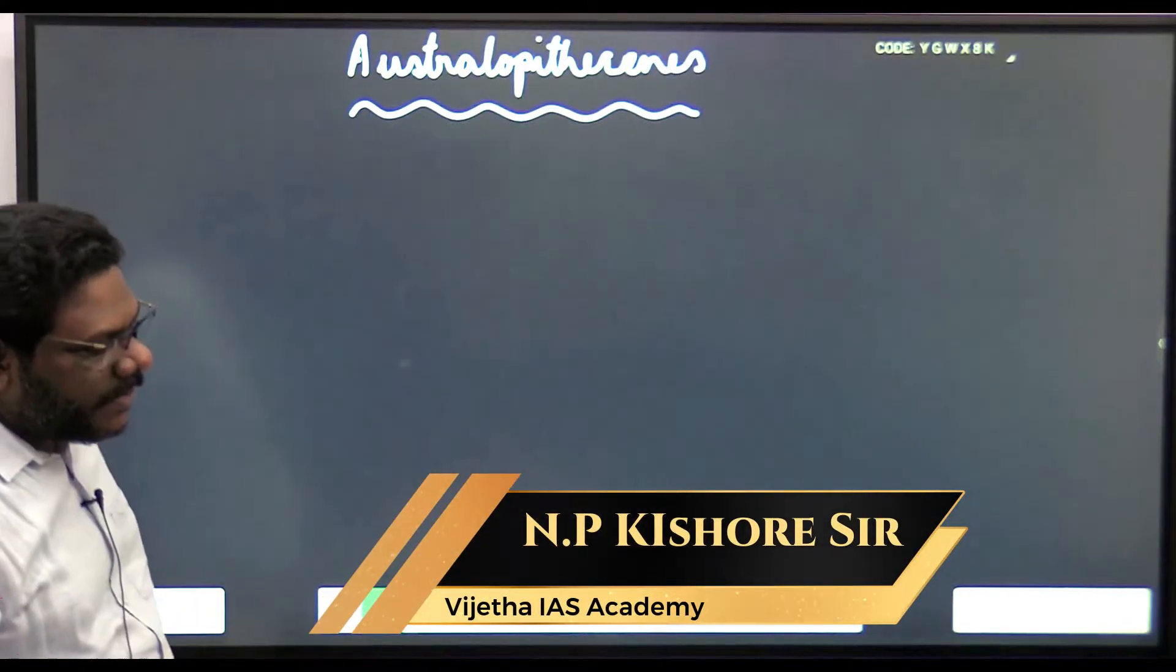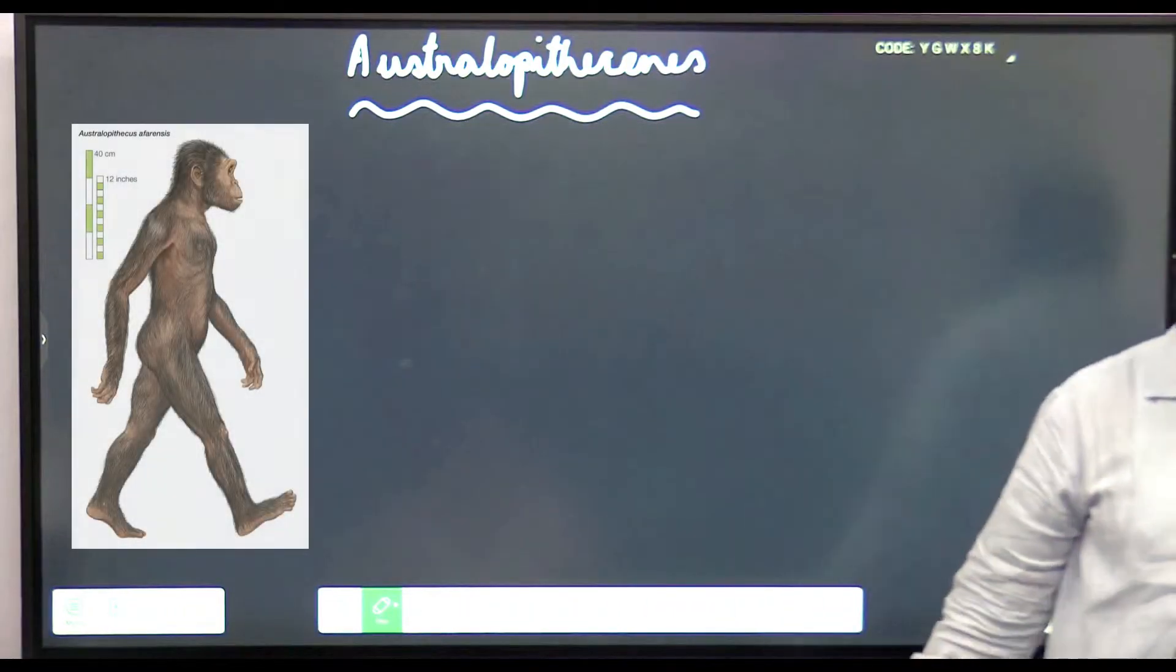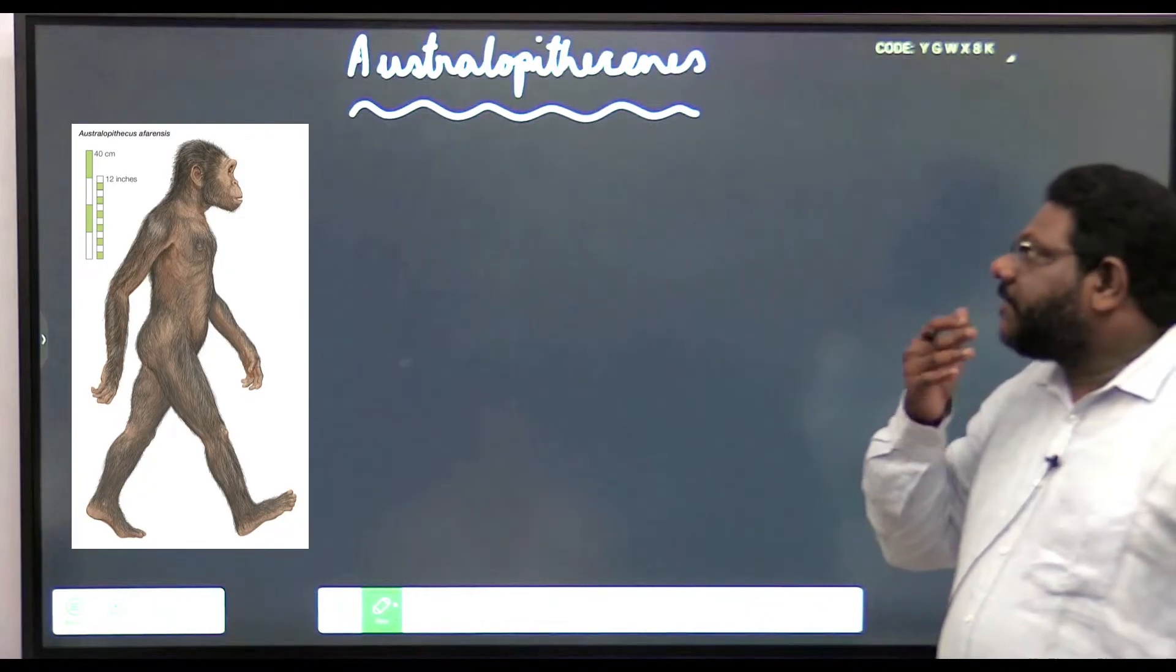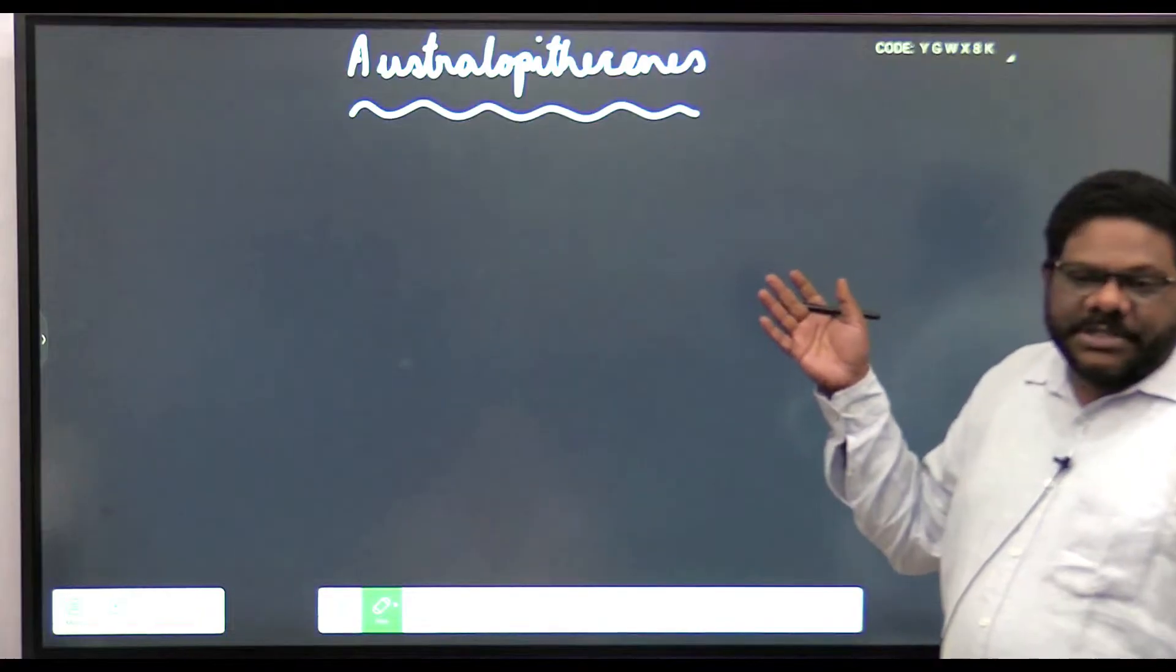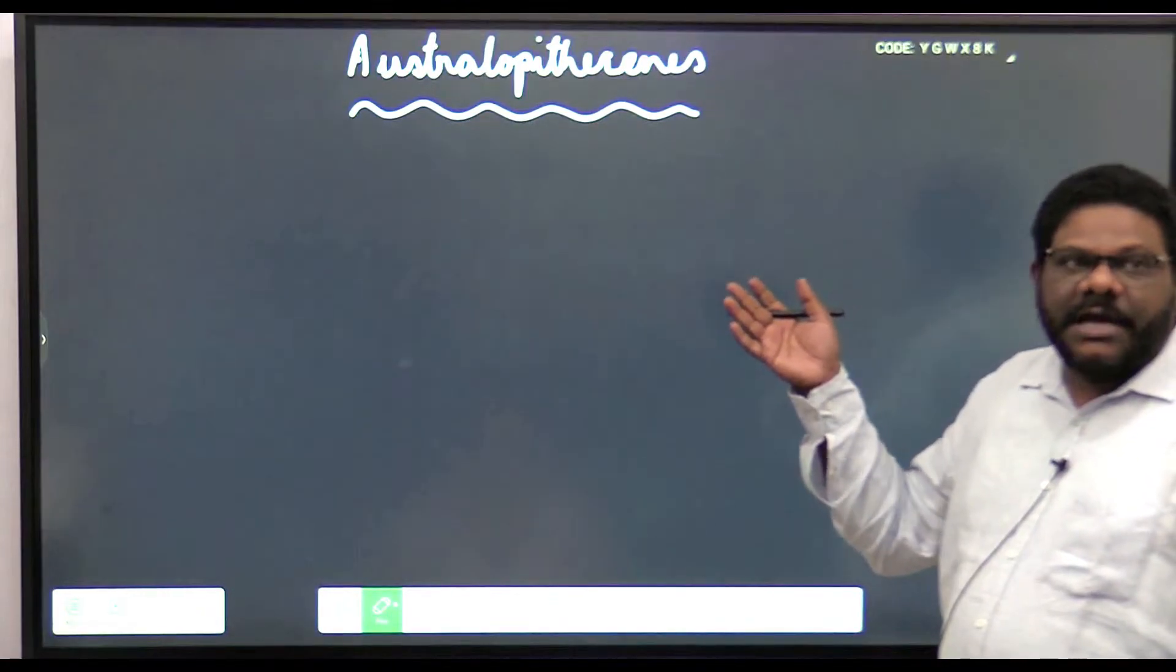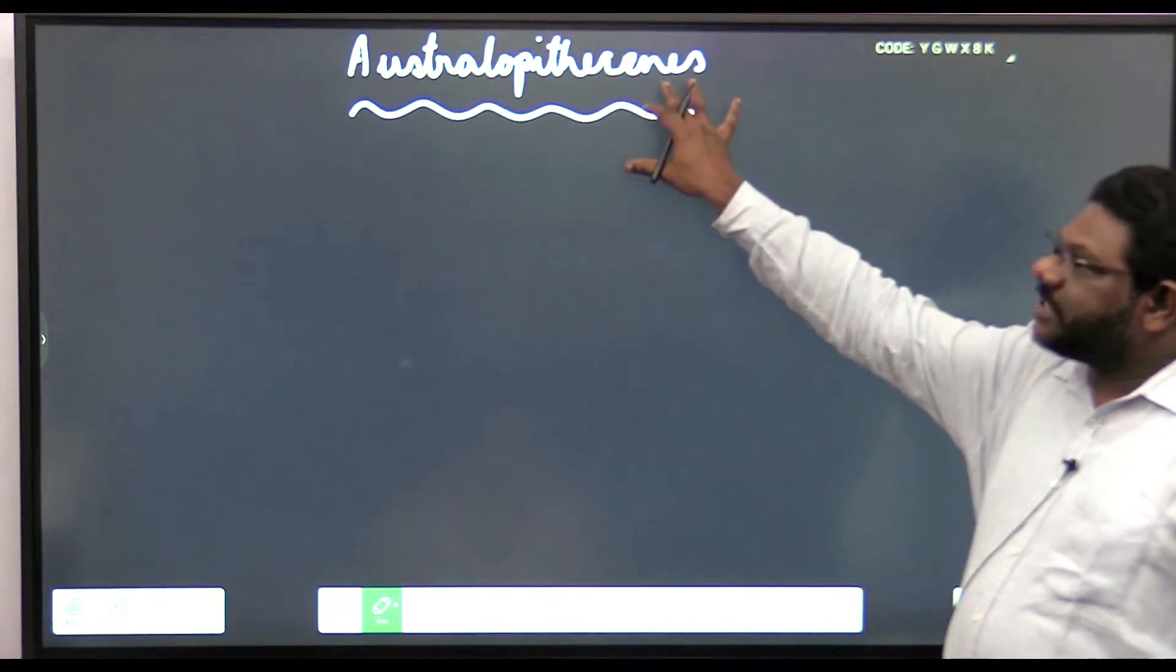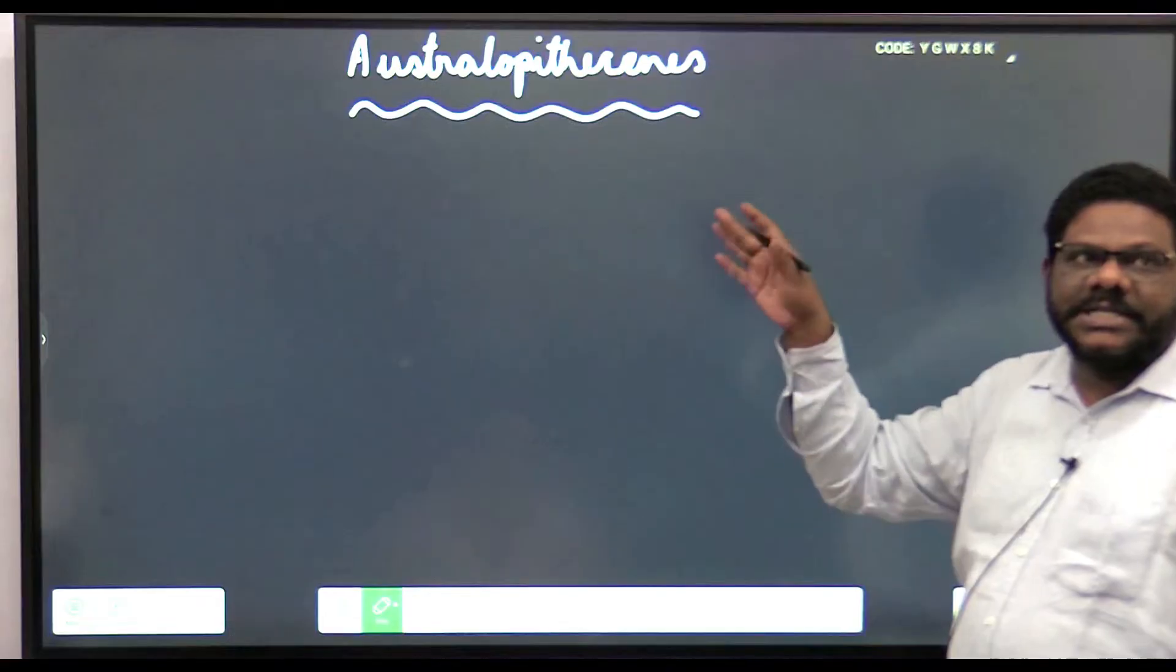Australopithecus is the name given to all members of the genus Australopithecus. There are different species of Australopithecus like Australopithecus robustus, Australopithecus africanus, afarensis, and so forth. Australopithecus is the collective name given to all these species under the genus.